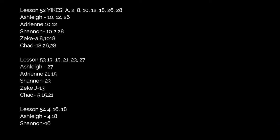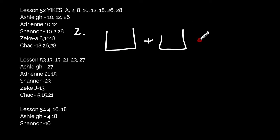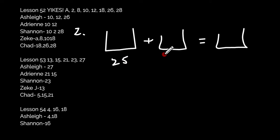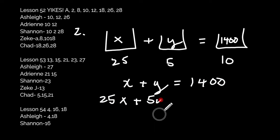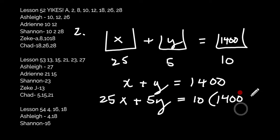Number two is another mixture problem. Buckets again — a chemist has one solution that's 25% salt, another that's 5% salt, and we need to make a 10% salt solution. We don't know x or y, but we know the final amount is 1,400. Two equations: what's in the buckets, then percent times amount equals 10 times 1,400. Multiply the top equation by negative 5, eliminate the y's, find x. They were essentially identical.